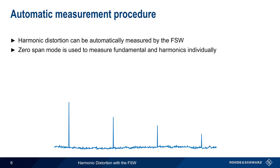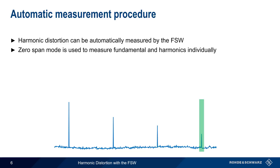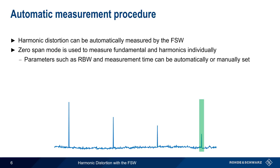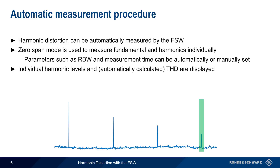Therefore, the FSW's automatic measurement procedure is recommended when measuring harmonic distortion. This function uses zero-span mode to measure the level of the fundamental and then each user-specified harmonic individually. Parameters such as the resolution bandwidth and measurement time can be either manually or automatically defined. At the end of the measurement, the FSW displays both the levels of the individual harmonics as well as the automatically calculated value of total harmonic distortion. In the remainder of this presentation, we'll go step by step through how to configure and use this automated measurement.